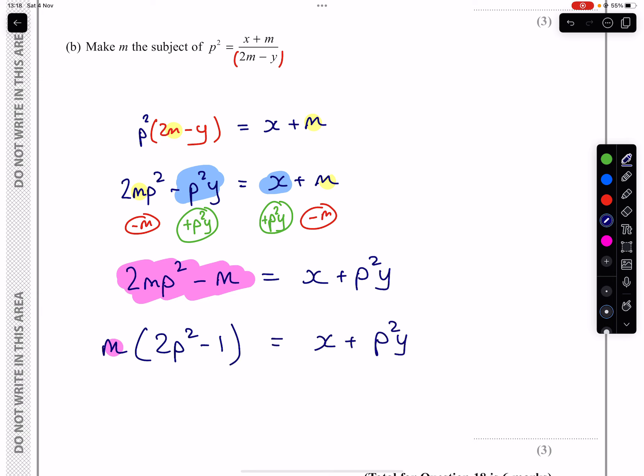And then in order to get M on its own, we divide both sides by that bracket, giving us an X plus P squared Y all over 2P squared minus 1. And coming back to what I said before, if you happen to have an answer that looks like this, you're perfectly correct. It's just you chose to get all of the M's on the right-hand side. And so your answer here will look the exact opposite of that in terms of pluses and minuses. Done.